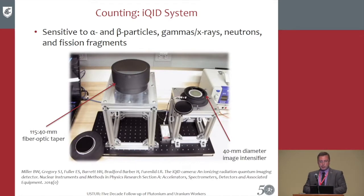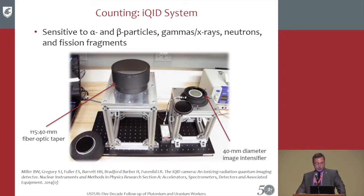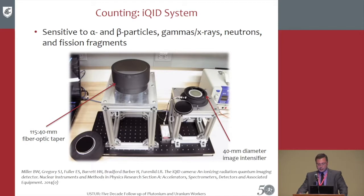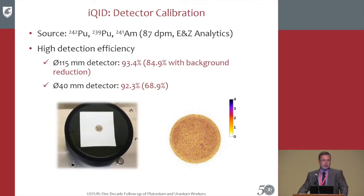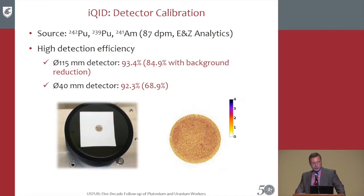Counting was performed with the autoradiography imager — iKID, a cute name. It was previously developed and verified; sensitivity was verified for various types of radiation: alpha, beta, gamma, x-rays, neutrons, and fission fragments. Two imager sizes were used: large with a 115 mm active field-of-view diameter and small with 40 mm. Calibration was performed with a standard source containing plutonium isotopes and Americium, with total activity of 87 DPM. Detection efficiency was 93.4% and 92.3% for large and small detectors, respectively.